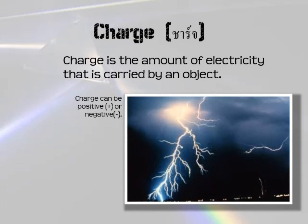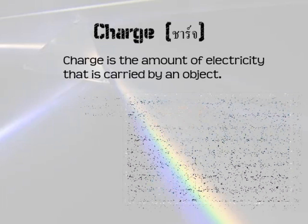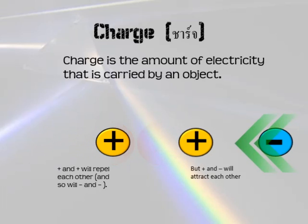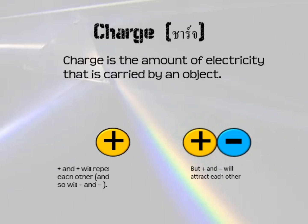Let's move on to charge. Charge is the amount of electricity carried by an object. In the picture you can see lightning — the charge is carried by the cloud and moves to the earth. Charge can be positive or negative. If you put positive and positive together, they repel — they push apart. But positive and negative will attract — they pull together.